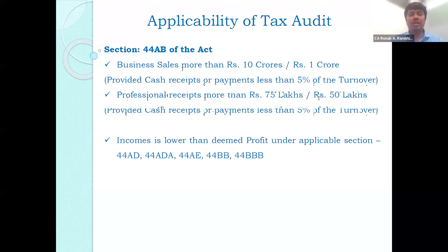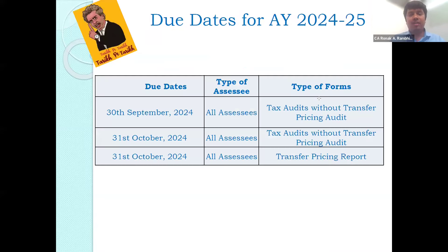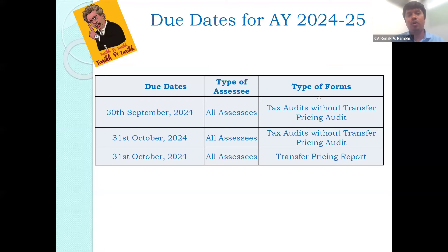For the assessment year 2024-25, the due dates are 30th September for all assessees for whom transfer pricing is not applicable. For assessees to whom transfer pricing is applicable, the due date becomes 31st October 2024, along with the transfer pricing report on the same day.